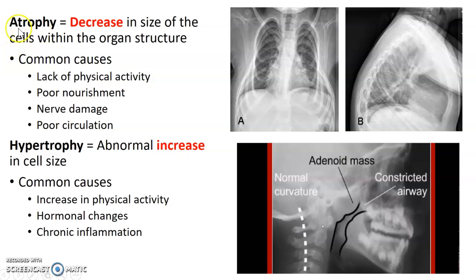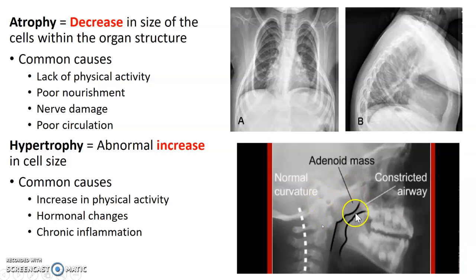Hypersthenic is your larger, obese patient. An increase in physical activity can increase cell size; hormonal changes and chronic inflammation can also cause hypertrophy. This image shows a large adenoid mass, and in this one you can see the chest wall is basically caved in — that's a decrease in size.